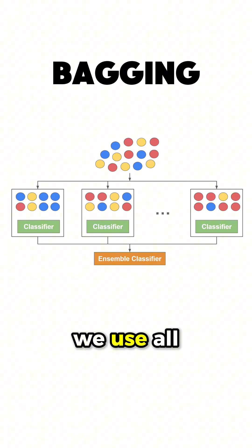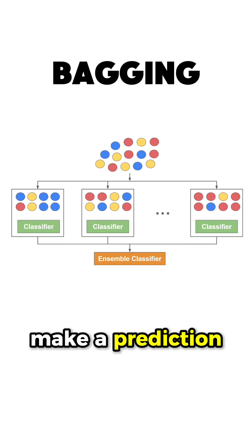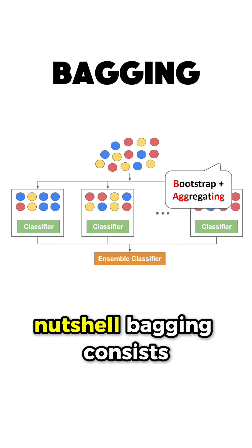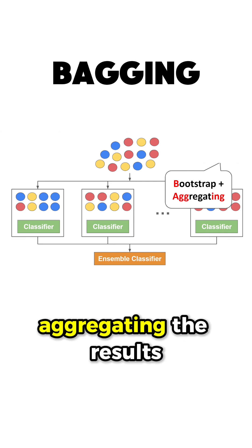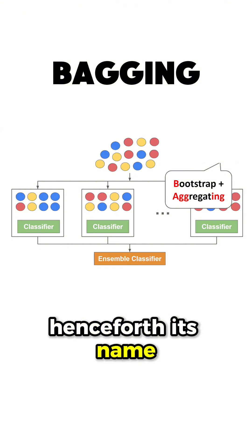Then, at the end, we use all these models to make a prediction in an ensemble classifier. So in a nutshell, Bagging consists of two steps: one is bootstrapping the dataset and two is aggregating the results, henceforth its name, Bagging.